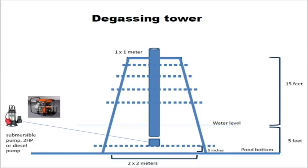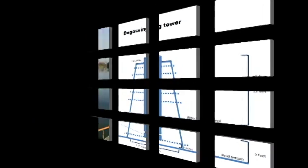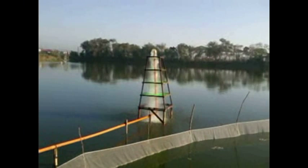Ideally, a 20-foot tower is advised in constructing a degassing tower. Five feet of the tower is submerged in the water. The remaining 15 feet of the tower is divided into 4 layers made up of chicken wires or other materials that will enable the breakdown of water into smaller particles. At the center of the tower, there should be a PVC pipe used as the inlet and outlet of the water.